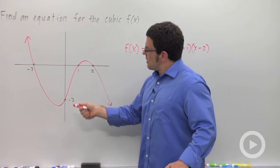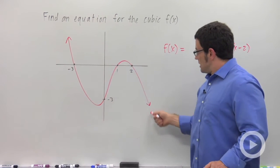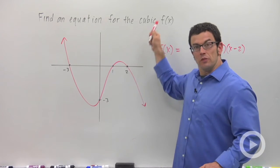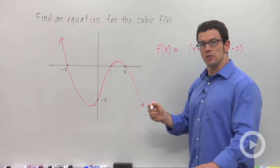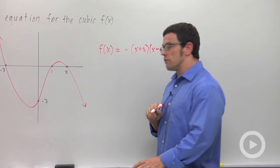And you might also notice that the function is decreasing. Normally, a cubic finishes by going up to infinity, but this one's going down to negative infinity. So there's probably a negative coefficient in front.